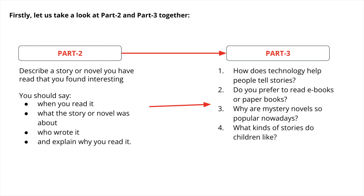The four part 3 questions are: Question 1 — how does technology help people tell stories? Question 2 — do you prefer to read ebooks or paper books? Question 3 — why are mystery novels so popular nowadays? Question 4 — what kinds of stories do children like? In this manner you can see that part 2 and part 3 are always connected.